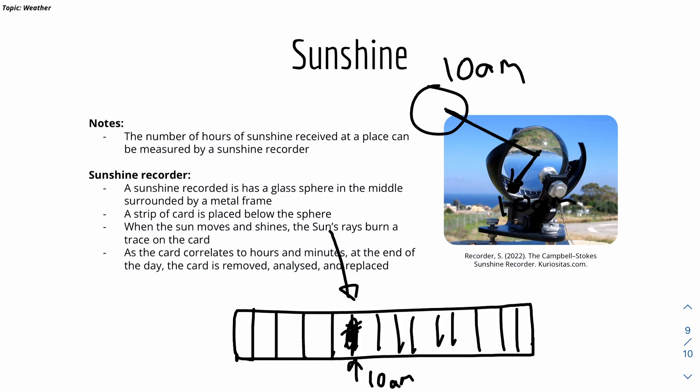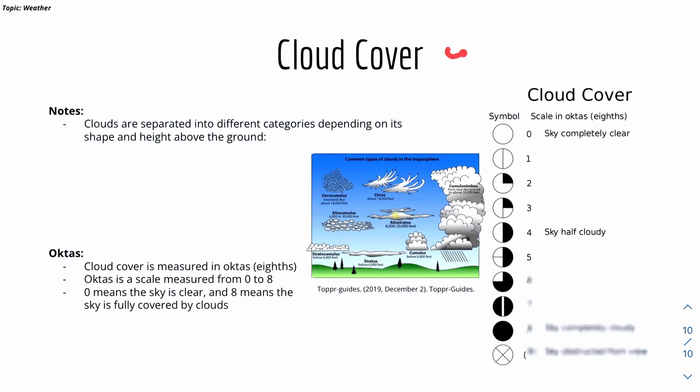Let's say if 11 a.m. is right here, and we can see that 11 a.m. is not burnt. This means that at 11 a.m., there's not much sunlight. Lastly, we have cloud cover. Cloud covers are separated into different categories based on the shape and height above the ground. In clouds, not cloud cover, clouds.